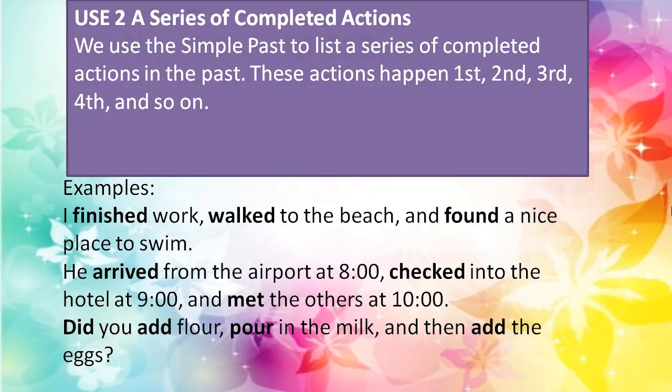Use number two: a series of completed actions. We use the simple past to list a series of completed actions in the past, in order. These actions happened in sequence — first, second, third, fourth — but we don't always know which happened first. They just happened in a sequence or in a series. For example: I finished work, walked to the beach, and found a nice place to swim — three actions that finished.